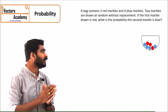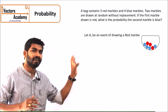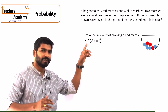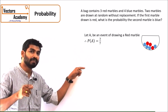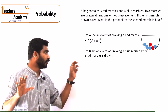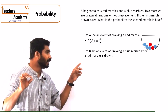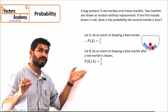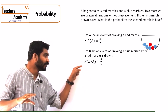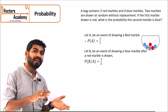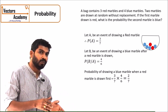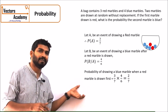The probability that the first marble drawn is red is 3 by 7, since there are 7 total marbles and 3 are red. For the second marble being blue, we have already drawn one marble, so only 6 remain. There are 4 blue marbles, so the conditional probability P(B|A) is 4 by 6. The final probability that the first is red and the second is blue is the product — 2 by 7.